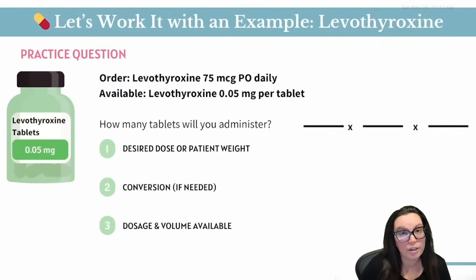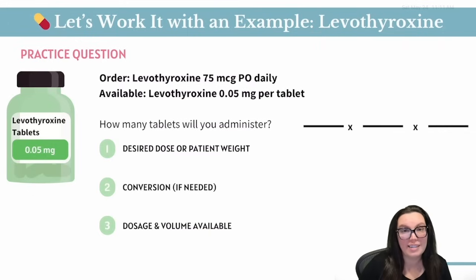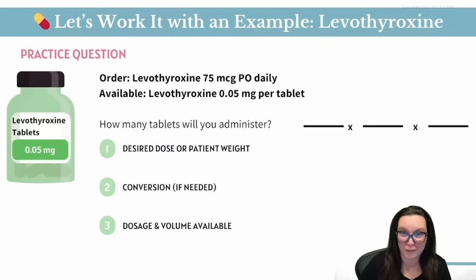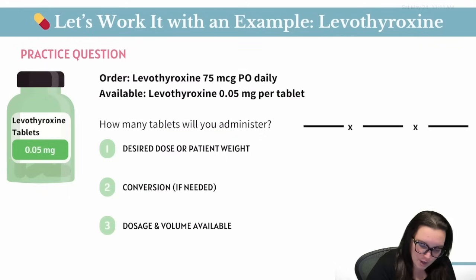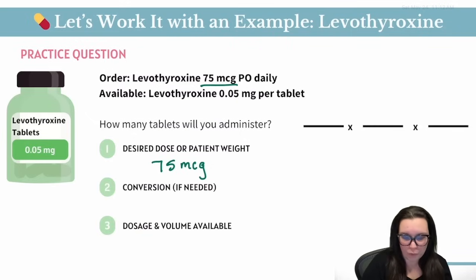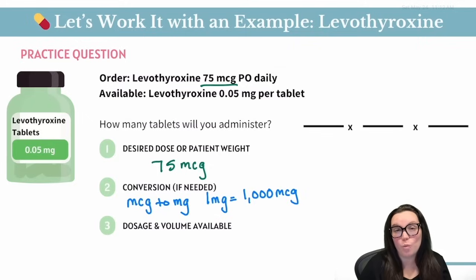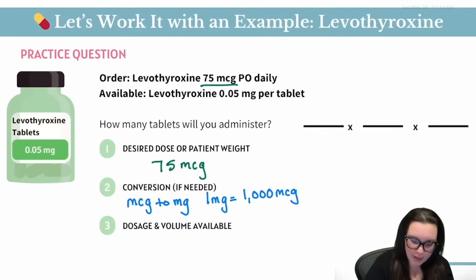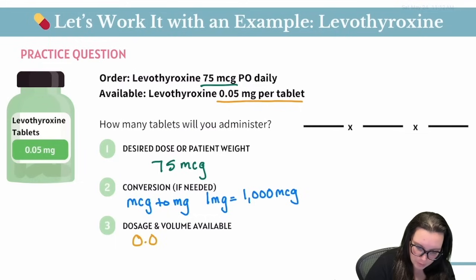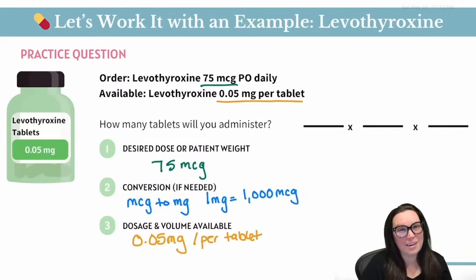Let's look at our next example. The order states we need to give levothyroxine 75 micrograms PO daily. The dose is available in 0.05 milligrams per tablet, so we're definitely going to have to do a conversion. For our first fraction, our desired dose is 75 micrograms. For the conversion, we need to go from micrograms to milligrams, and we know one milligram equals 1000 micrograms. The medication dosage is available at 0.05 milligrams per tablet.